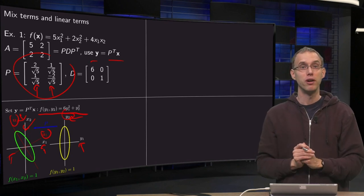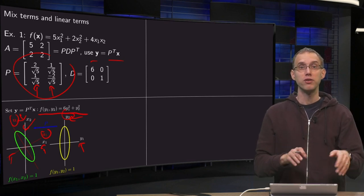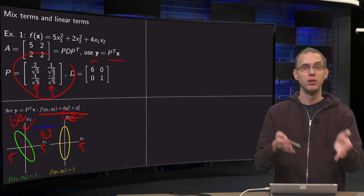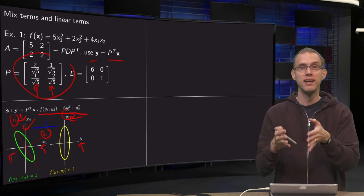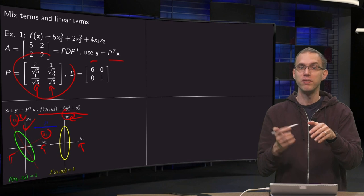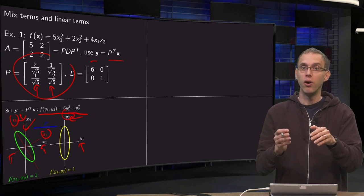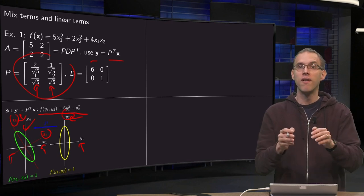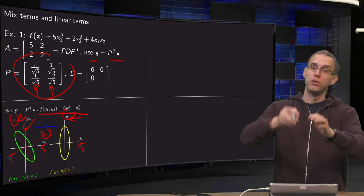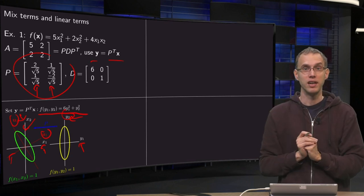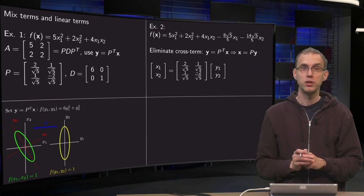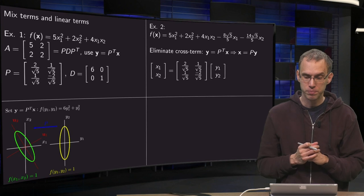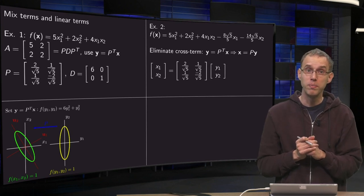So how do you draw quadratic forms if you also have mixed terms? First you eliminate the mixed terms. Draw the easier case in the Y1, Y2 plane. Use the transformation P — which is a rotation or rotation and inversion — to rotate your ellipse, and then you get your figure in the X1, X2 plane. That is what you do if you have only mixed terms.